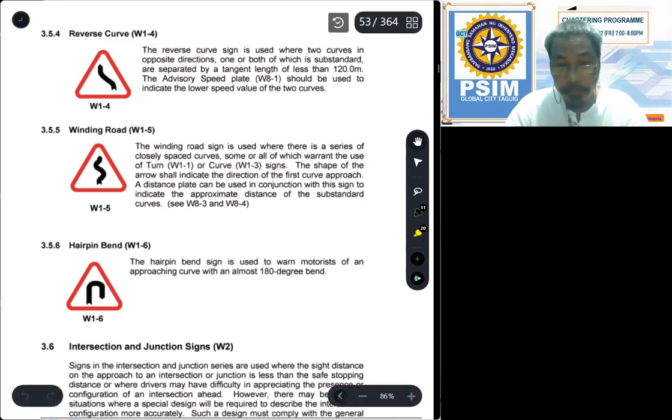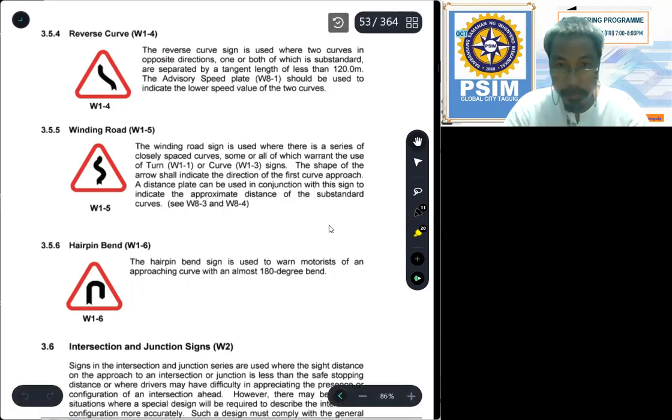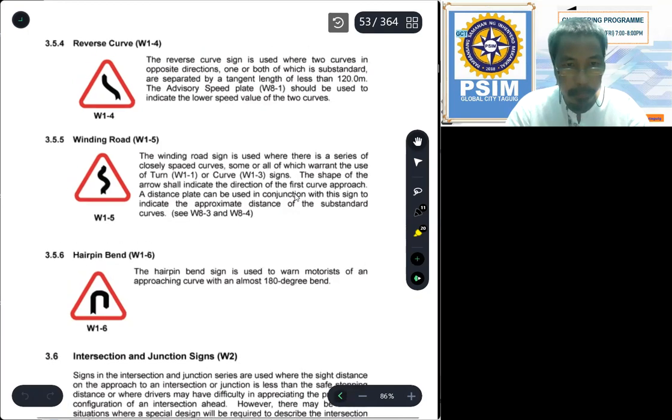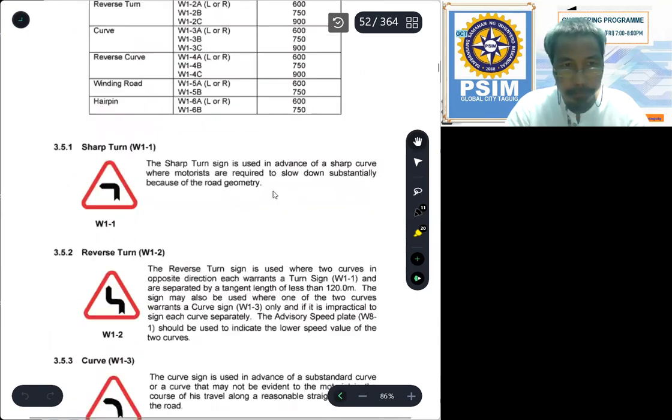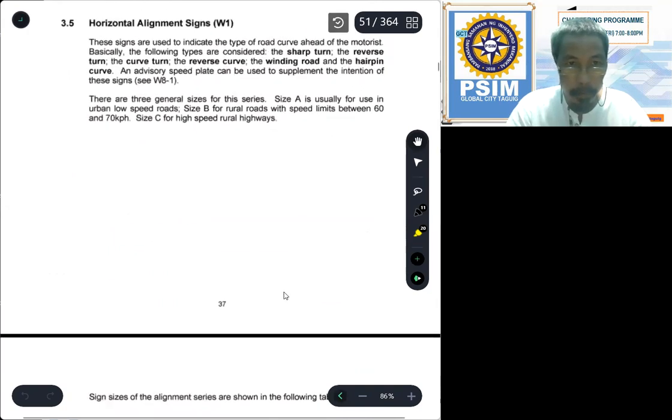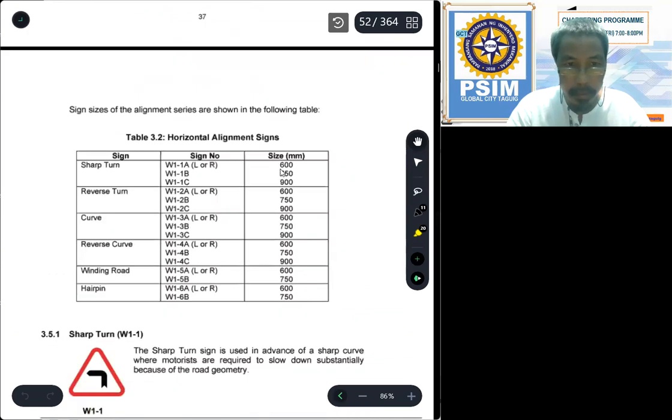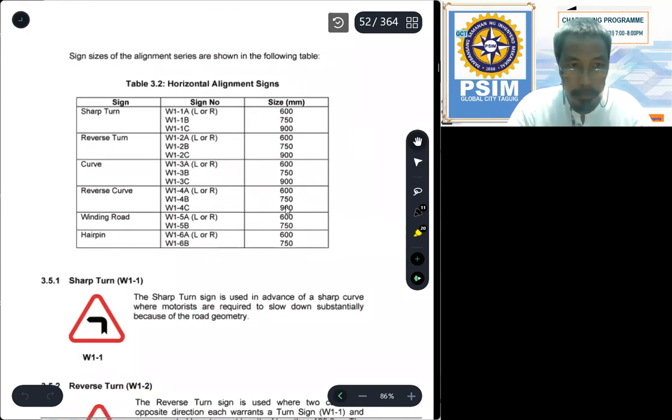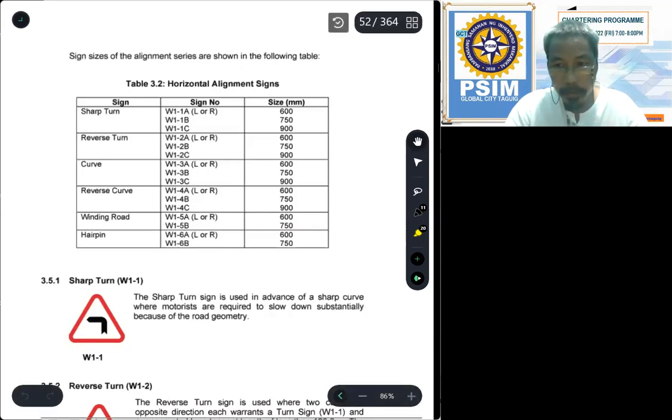And that's all for the type W1 sign classification. Let us summarize. There are six types in this horizontal alignment sign. Sharp turn, reverse turn, curve, reverse curve, winding road, and hairpin. Again, this is Dr. Raypi, preaching engineering for nation building. Thank you. See you soon.